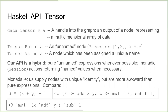The main type, other than Session, is Tensor — just a handle into the graph, representing a single dense multi-dimensional array of data, like a 2x2 matrix of floats or a vector of ints. We have two flavors of tensors: an unnamed node (TensorBuild) and a named node (TensorValue). Our API is a hybrid — when possible, we use pure unnamed expressions, but at some points we need to expose named values through the monadic session API.